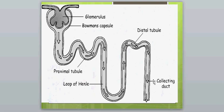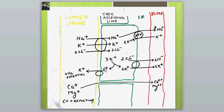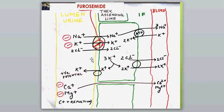Regarding the mechanism of action of the loop diuretic furosemide: furosemide is secreted from the proximal tubules with the help of the organic ion transporter system into the lumen of the nephron. It then travels with the fluid flow and ultimately reaches the thick ascending limb of the loop of Henle, where the sodium-potassium-chloride cotransport system is operating. Furosemide blocks this cotransporter.